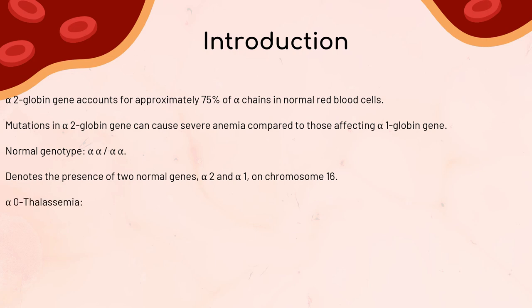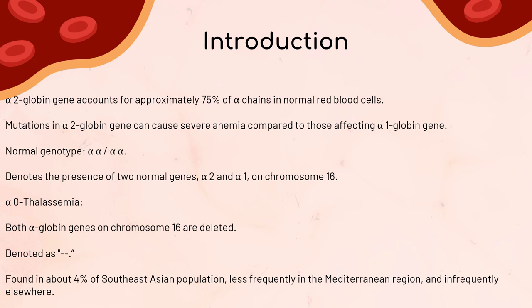Time to explore the types of alpha-thalassemias. First, alpha-0-thalassemia, where both alpha-globin genes on chromosome 16 are deleted. That means there's no production of alpha chains from that chromosome, and we denote it as (--). Alpha-0-thalassemia is found in about 4% of the population in Southeast Asia, less frequently in the Mediterranean region, and infrequently in other parts of the world.